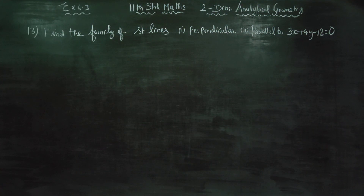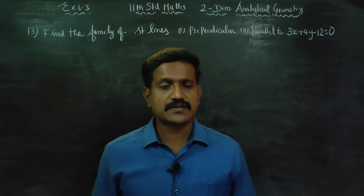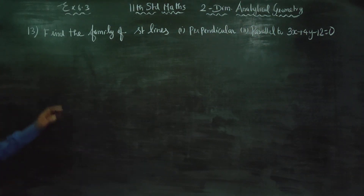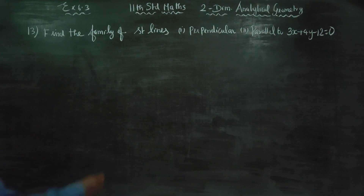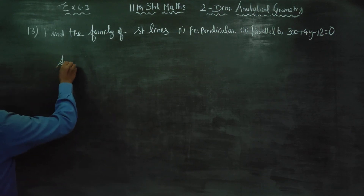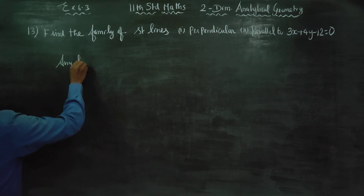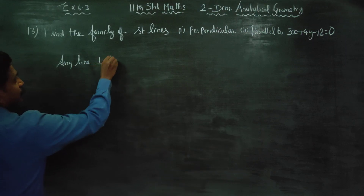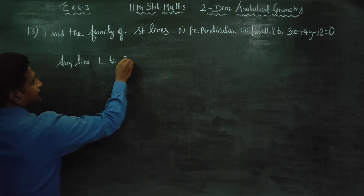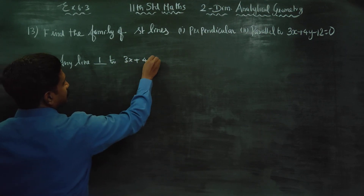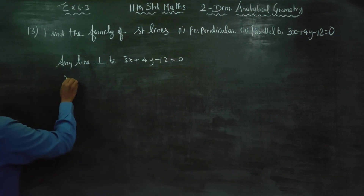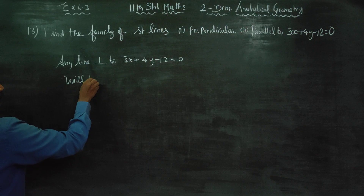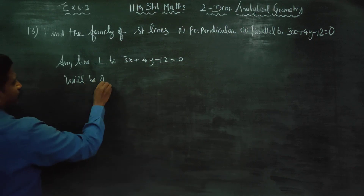Dear 11th standard students, in exercise number 6.3, sum number 13: find the family of straight lines perpendicular to and parallel to. Any line perpendicular to 3x plus 4y minus 12 is equal to 0 will be of the form.